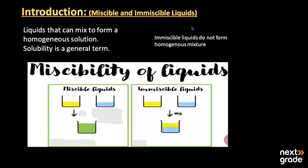Asalaamu alaikum, my dear students. I hope all of you are fine and doing well. The topic we are going to discuss is miscible and immiscible liquids — two types of liquids. Miscible means the liquid that is soluble; liquids that can mix to form a homogeneous solution are known as miscible liquids. For example, we take two liquids: ethanol and water.